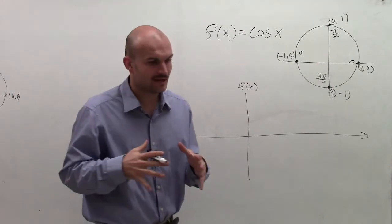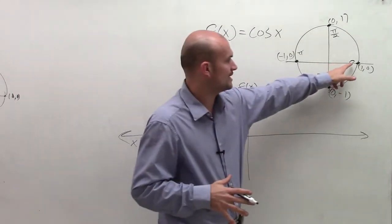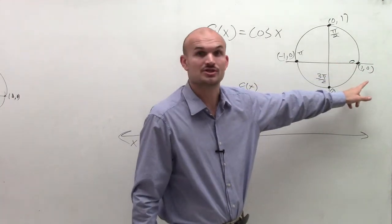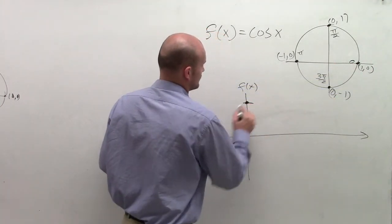So let's look at cosine of x for our 0 degree angle. So the cosine of 0 degrees is the x value, which is 1. So I'm going to go up to 1 and make a nice little dot.